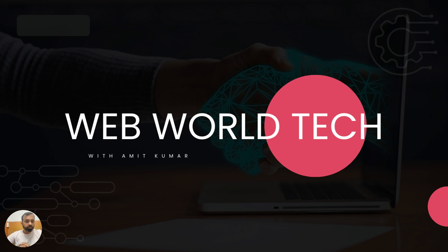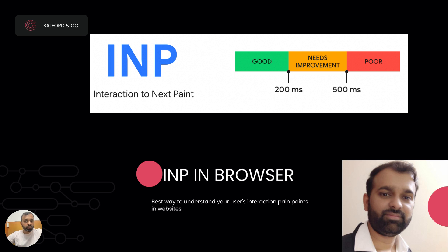Hi guys, my name is Amit Kumar and welcome to WebWorld Tech. In today's video we are going to talk about INP. INP stands for Interaction to Next Paint. It is one of the Core Web Vitals introduced by Google recently, and it's very important because it helps you understand the pain points a user has when interacting with your system — essentially the latency created by user interactions like clicking a button or scrolling, whether caused by JavaScript execution time or API response delays.